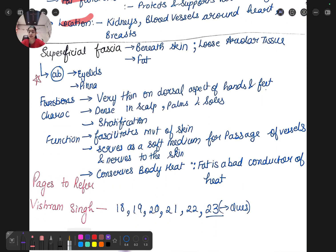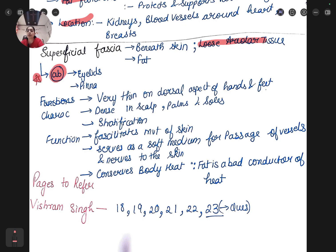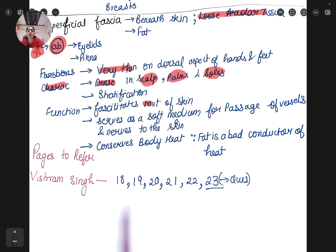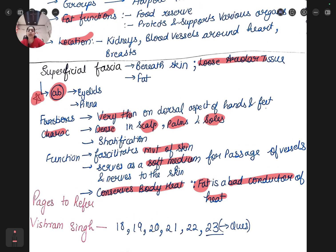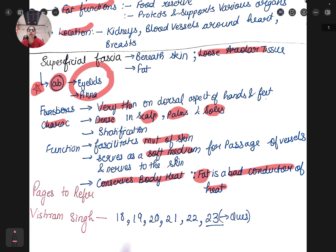Next comes superficial fascia - all these questions are short note kind of thing. Superficial fascia is beneath the skin and which type of tissue is loose areolar tissue. Where it is absent is a very important point and can come as an MCQ. It's absent in eyelids and pinna. It is very thin on dorsal aspect of hands and feet and dense in scalp, palms and soles. The function is movement of the skin and it serves as a soft medium and conserves body heat because fat is a bad conductor of heat.